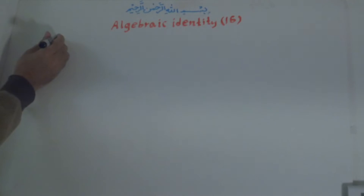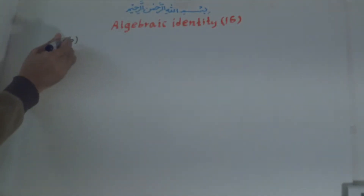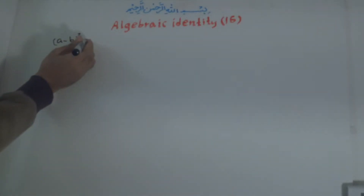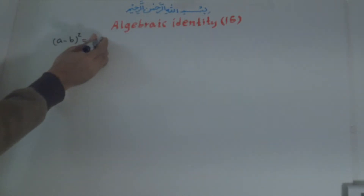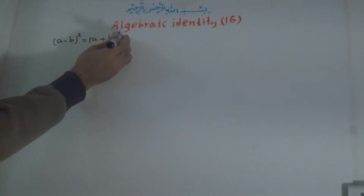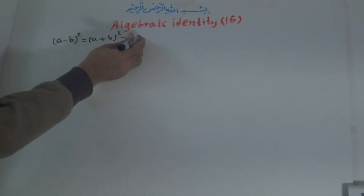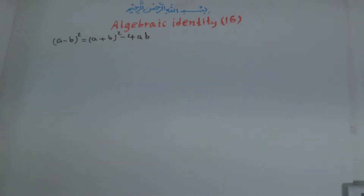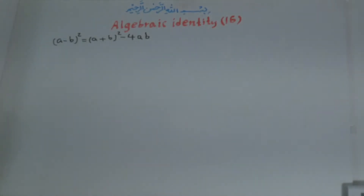Algebraic Identity number 16 states that (a - b)² is equal to (a + b)² minus 4ab. It is the opposite of Identity number 15. In number 15, (a + b)² was equal to (a - b)² plus 4ab. But here, (a - b)² is equal to (a + b)² minus 4ab.